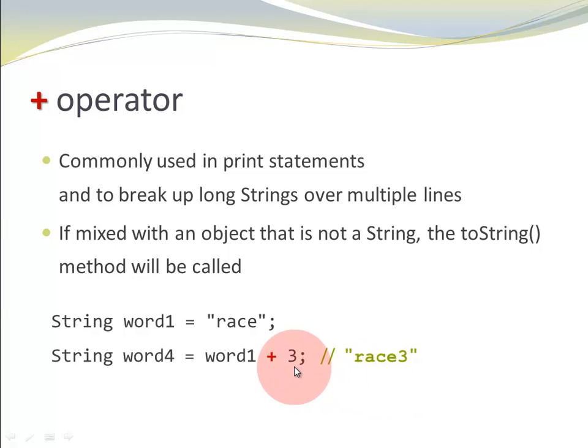So, in this case, three is a primitive type int. That doesn't really work for a string concatenation. So, my primitive type int is boxed to the wrapper class type integer. Now, I have a string plus an uppercase integer object. At this point, the toString method is going to be called on uppercase integer. And the toString method for the uppercase integer three is the string three. So, race plus three is race three.